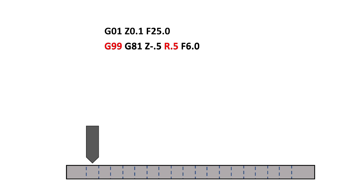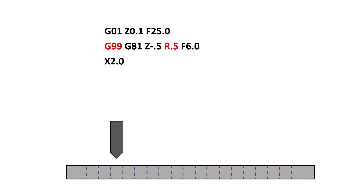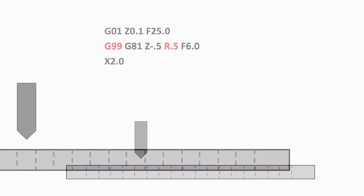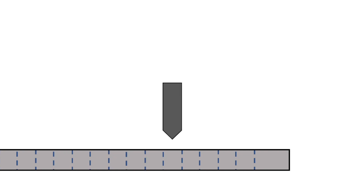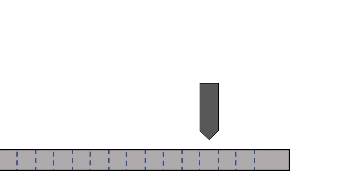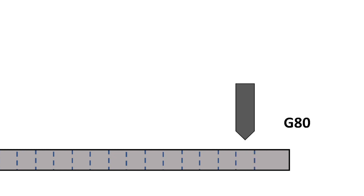F6.0 is the feed rate at which to cut the hole. Once this hole is drilled, the tool will retract to 0.5 inches above the workpiece. It will read the next line of code, X2.0, and will move to this new position and cut the next hole with the same parameters as the first. Once all of the holes have been cut, the G80 is read by the machine and the G99 becomes active. The tool returns to the retract position.